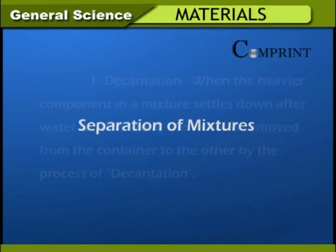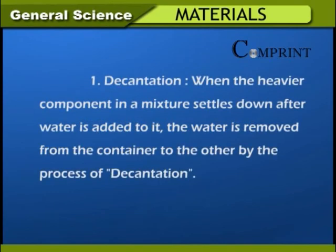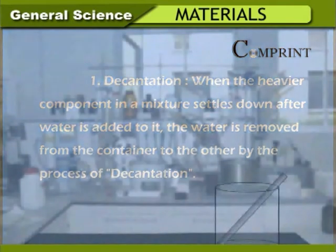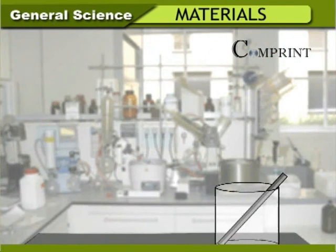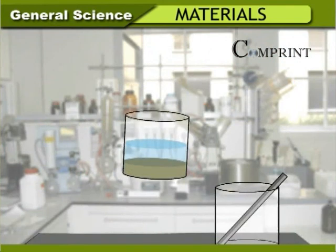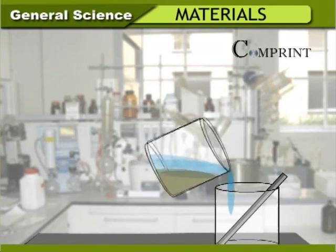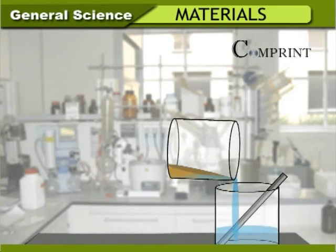Separation of mixtures — 1. Decantation: When the heavier component in a mixture settles down after water is added, the water is removed to another container by the process of decantation. Take a glass of water, pour some sand into it, and stir. Now separate the water into another container without disturbing the sand — the two constituents are separated.